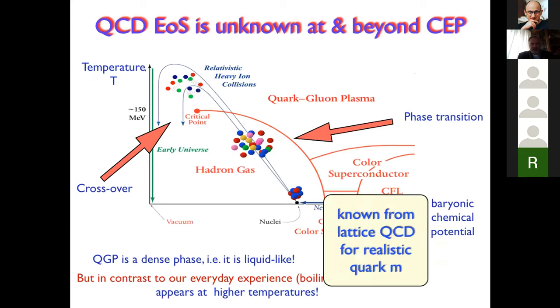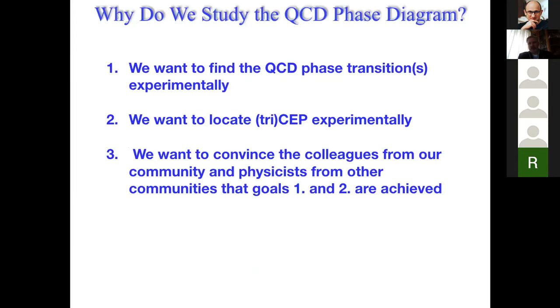I will skip this diagram because everyone knows it well. Let's discuss our basic motivations. First, we want to find the QCD phase transitions experimentally. Second, we want to locate the critical endpoint experimentally. And third, we want to convince our colleagues in physics from other communities that goals one and two are achieved.